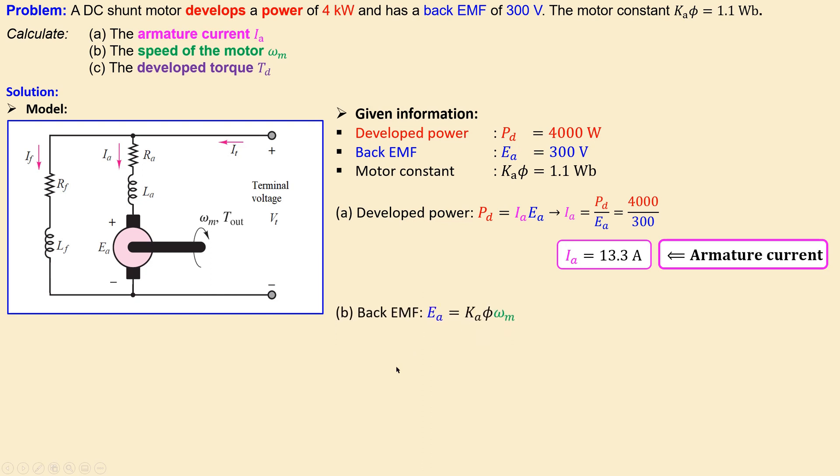Now going to question b, we need to of course calculate now the motor speed that is related to the back EMF using this formula. So you need again your motor constant. You multiply it by the speed of your motor - that will give you the back EMF voltage.